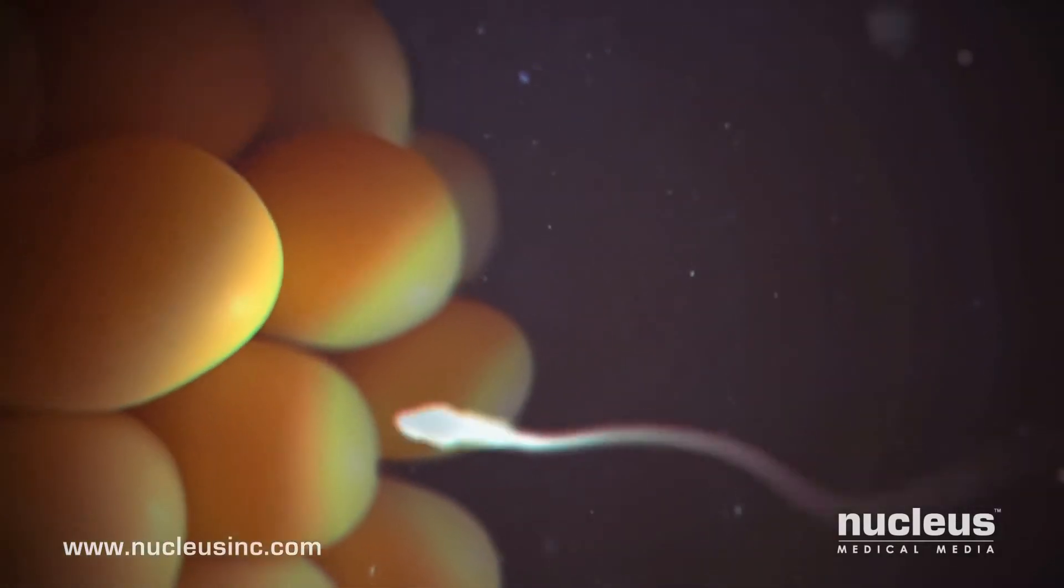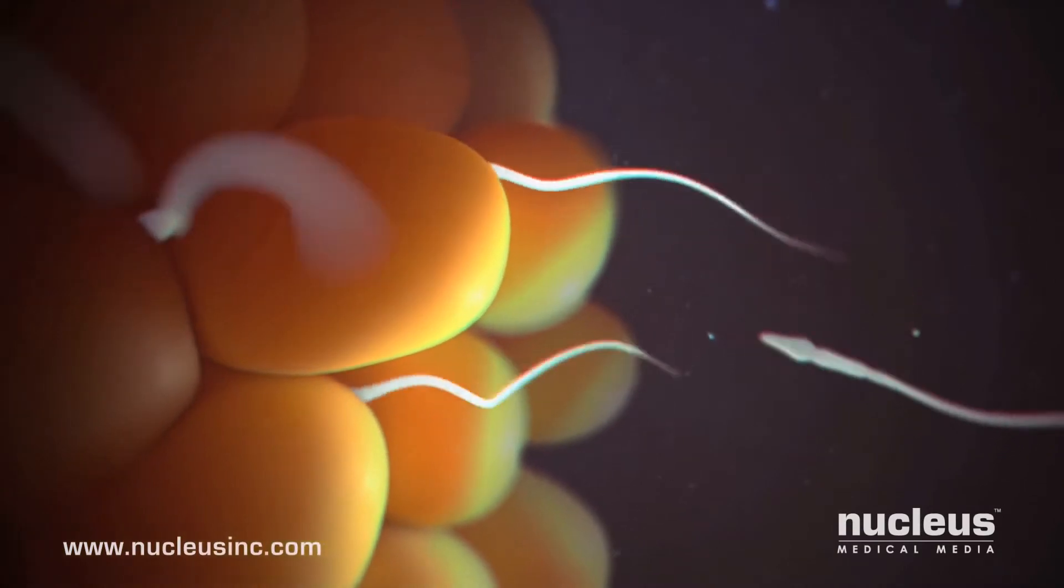The egg is covered with a layer of cells called the corona radiata. The sperm must push through this layer to reach the outer layer of the egg, the zona pellucida.